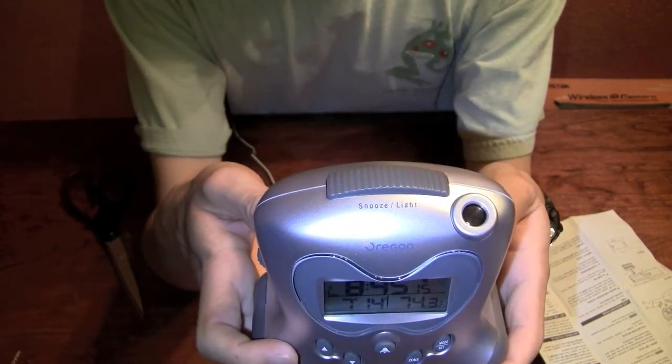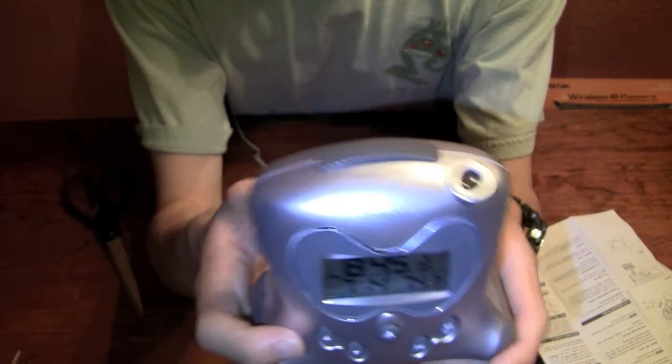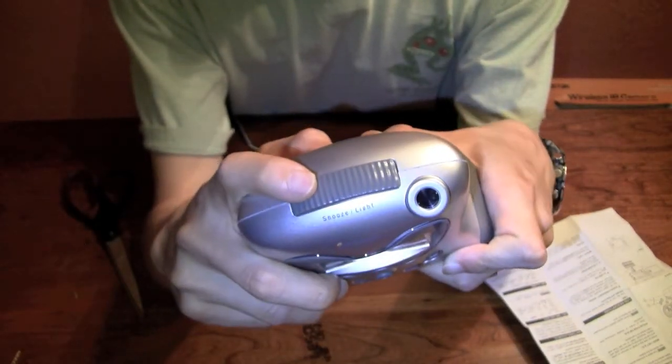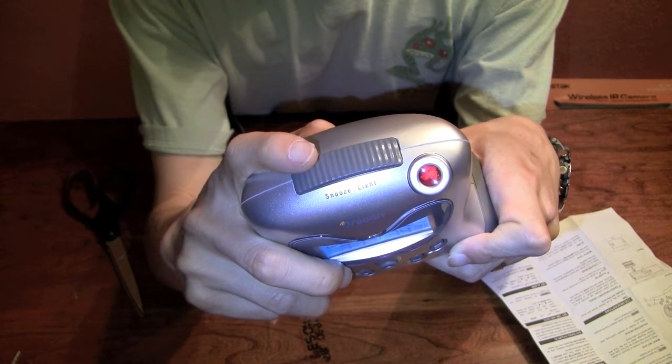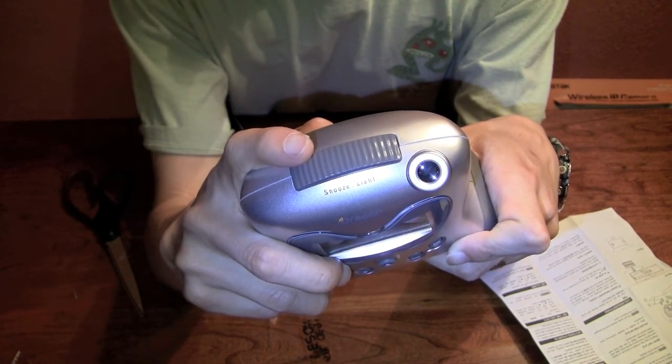And that's it. This is the alarm clock. Very simple. Press this button to activate the projection light. Look at that. It's red. And after a few seconds, it goes off.